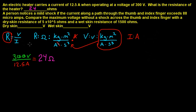For the second part, a person notices a mild shock if the current through the thumb and index finger exceeds 88 microamps. Compare the maximum voltage without a shock with a dry skin resistance of 5 times 10^5 ohms and a wet skin resistance of 1500 ohms. We're going to set this problem up to find V.